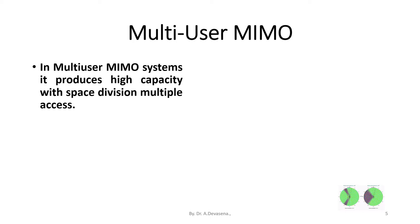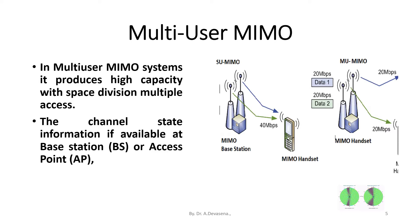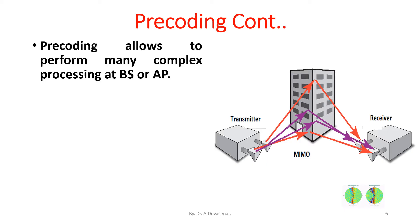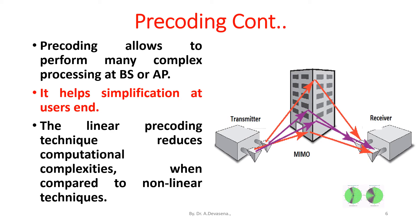In multi-user MIMO systems, it produces high capacity with Space Division Multiple Access (SDMA). If channel state information is available at the base station or access point, then multi-user interference can be suppressed. Pre-coding allows many complex processing tasks to be performed at the base station or access point, helping to simplify processing at the user's end.